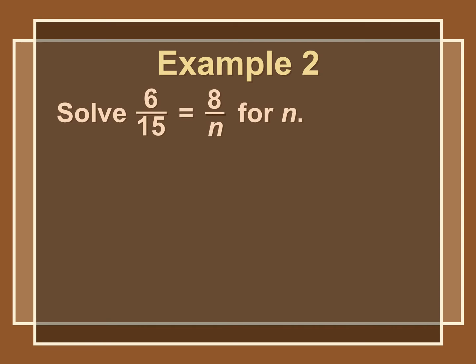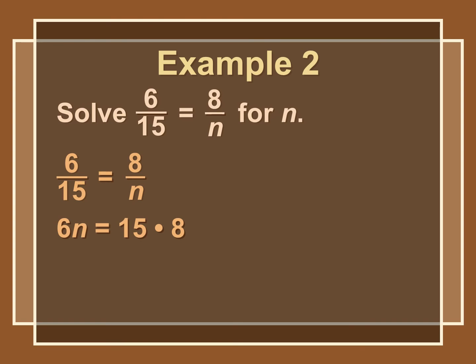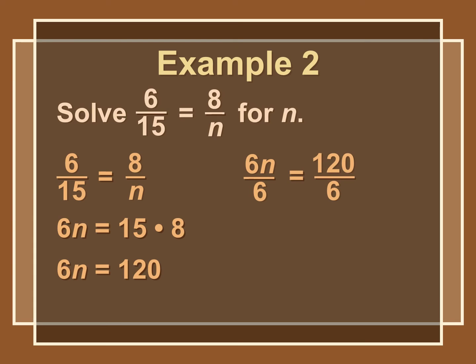Now we'll use the property of proportions to cross-multiply and solve for n. Multiplying the extremes gives 6n, and multiplying the means gives 15 times 8, so 6n equals 120. Dividing both sides by 6, we find n is equal to 20.